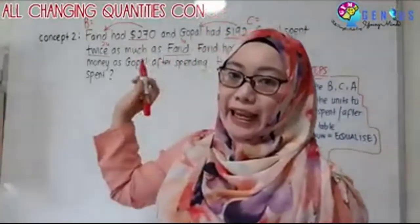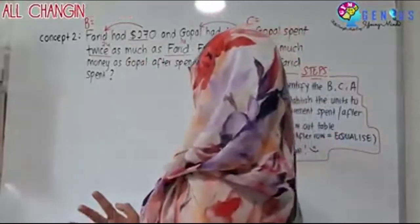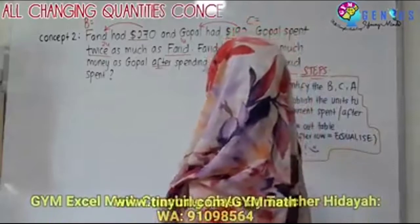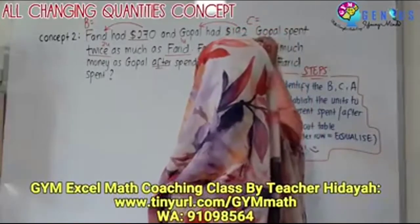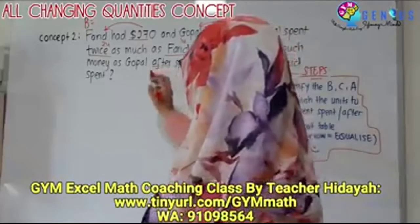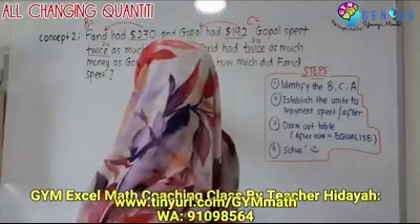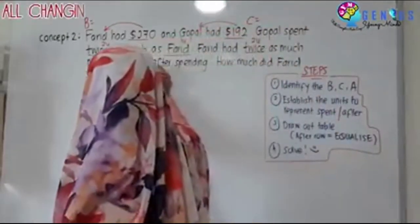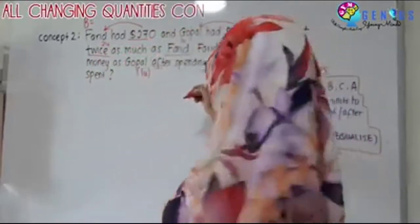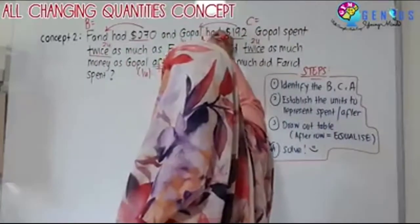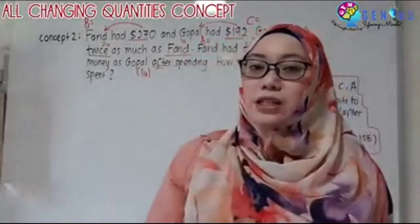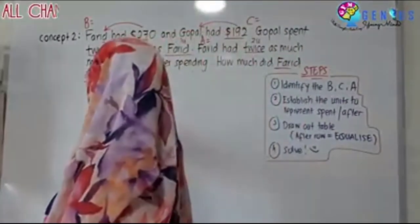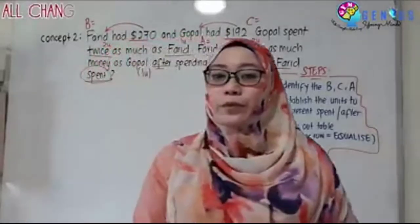The full stop indicates that this is my after. Also, the words 'after spending' tell me that this is my after. Farid had twice — so this one is two units — as much money as Gopal after spending, which means Gopal now has one unit after spending. This sentence tells me that this is my after. How much did Farid spend? So I want to know what Farid spent — this is what I want to find out.